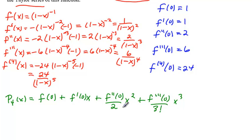and maybe I'll put the factorial with the 2 as well, plus the 4th derivative of f at 0 over 4 factorial times x to the 4th.